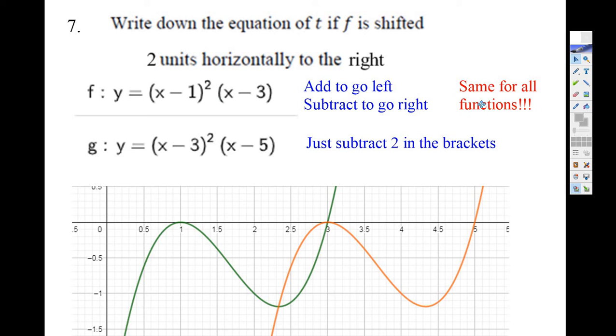And it's the same for trig functions, for parabola, for all sorts of functions. So all you do, oh, if I want to go to the right, I'll subtract. So just subtract 2. Minus 1 minus 2 is x minus 3. Minus 3 minus 2 is minus 5. And there's your new function, x minus 3 squared, x minus 5. Just subtract 2 in the brackets, and you get a 2 mark question.